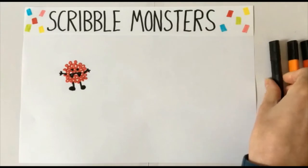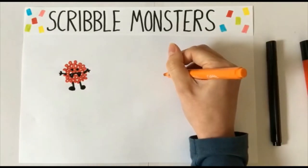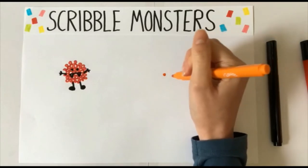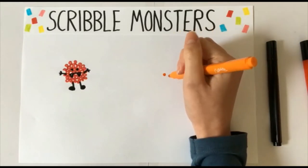Next have a go at making a spiky monster. Draw a dot on your paper and draw spiky fur all around the dot. Make sure you start at the dot and come back to it.